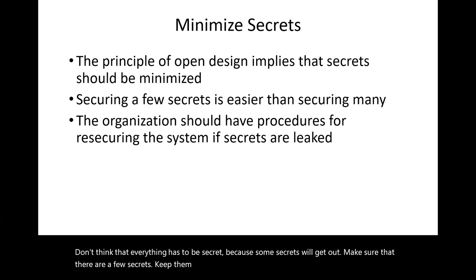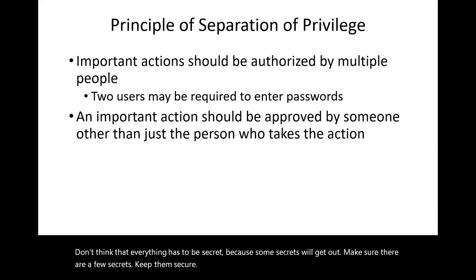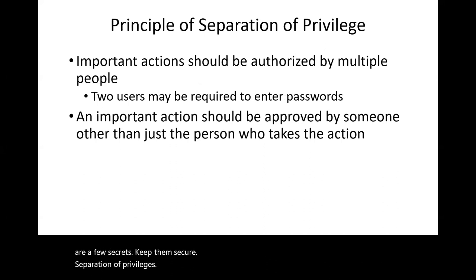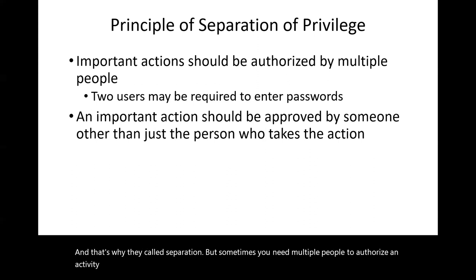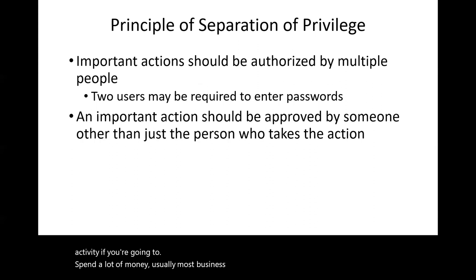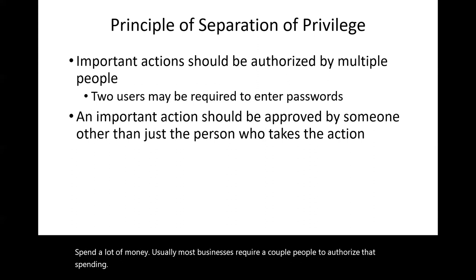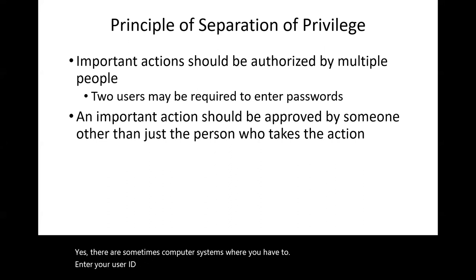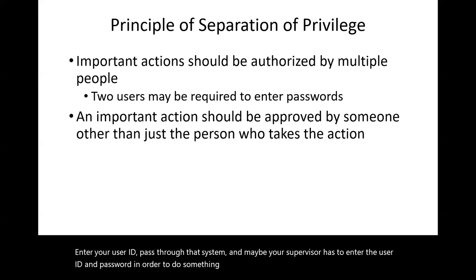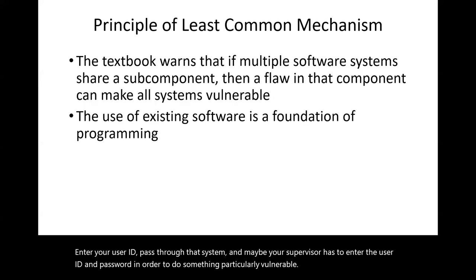Companies work hard to keep their proprietary source code secret because they don't want others to see it. Part of good design is minimizing the number of secrets — don't think everything has to be secret, because some secrets will get out. Make sure there are a few critical secrets and keep those secure. Separation of privileges means sometimes you need multiple people to authorize an activity — most businesses require multiple people to authorize large spending decisions.